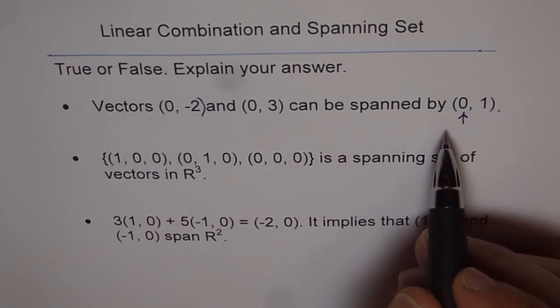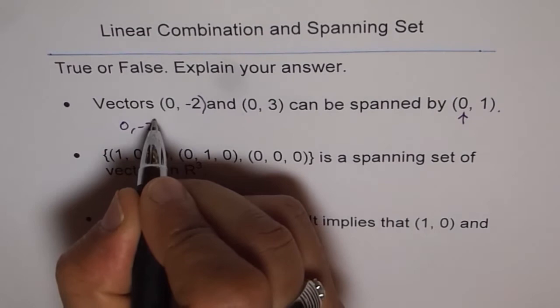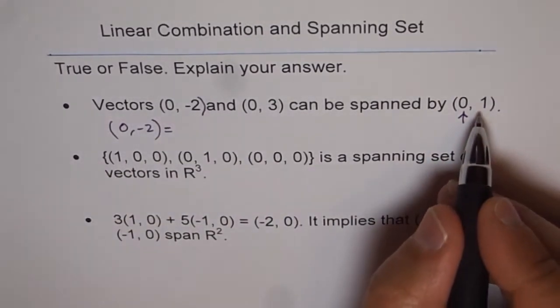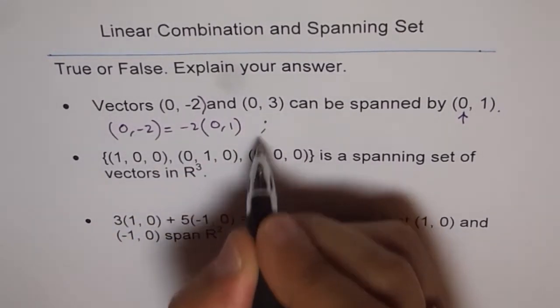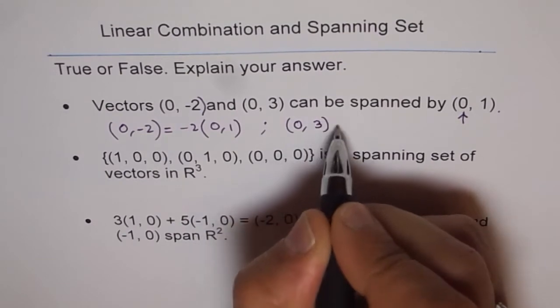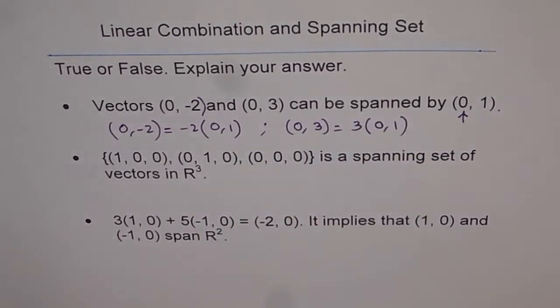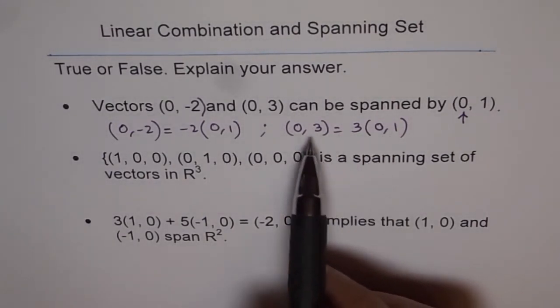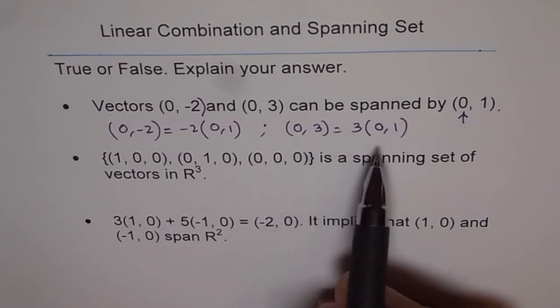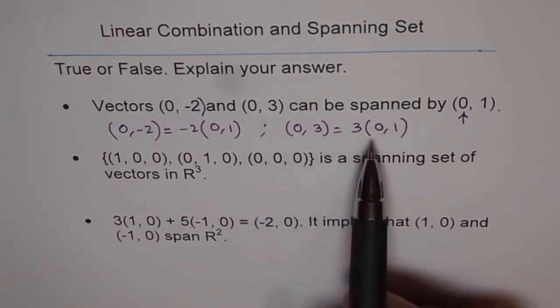So they can be spanned as a scalar multiple. So we can always write (0,-2) as equal to -2 times (0,1). And we can also write (0,3) as equal to 3 times (0,1). Now these are scalar multiples. So whenever you have one vector as a scalar multiple of the other, then those vectors are collinear. But the idea is you can write one as a linear combination.